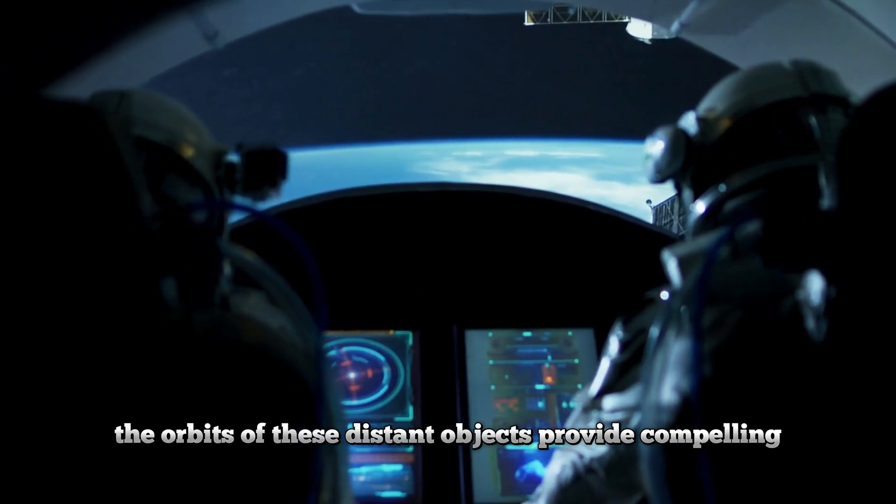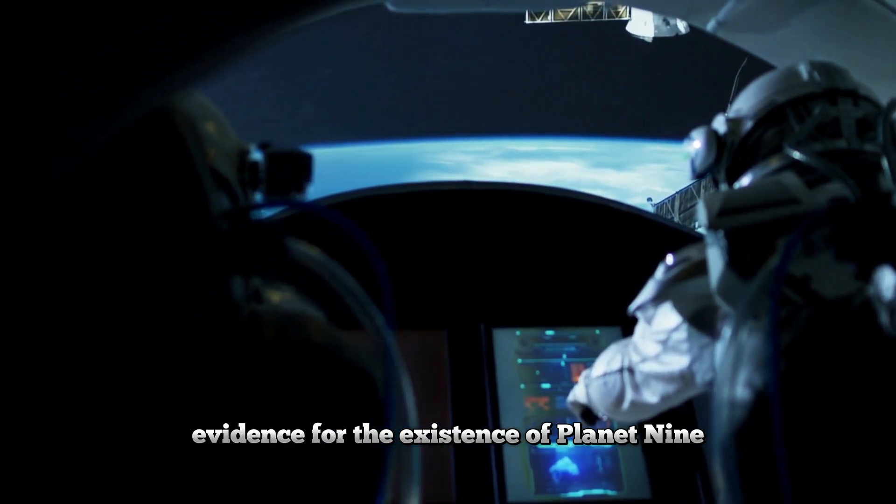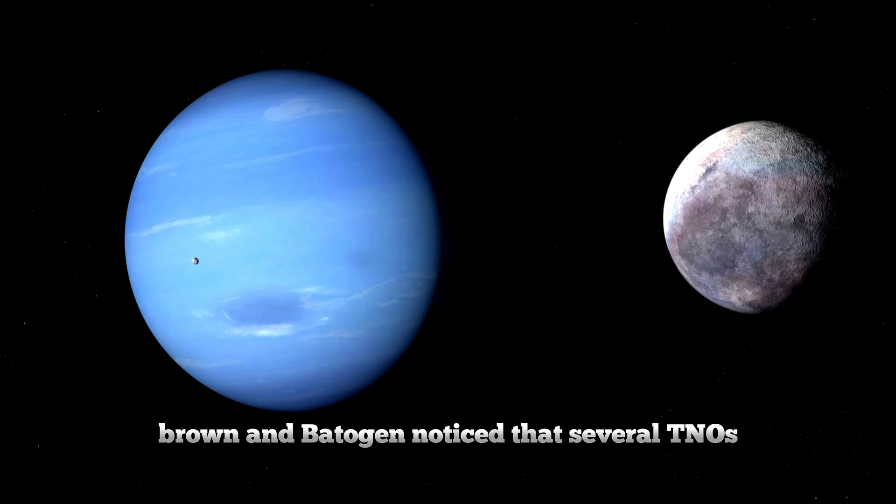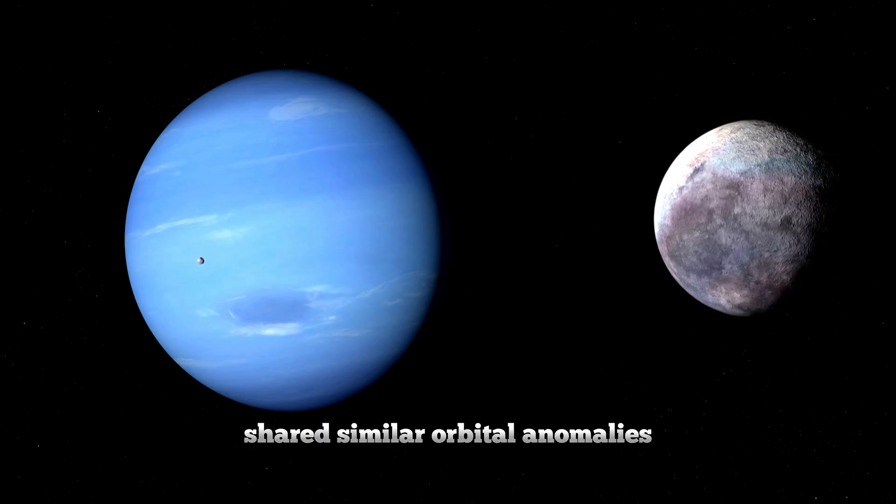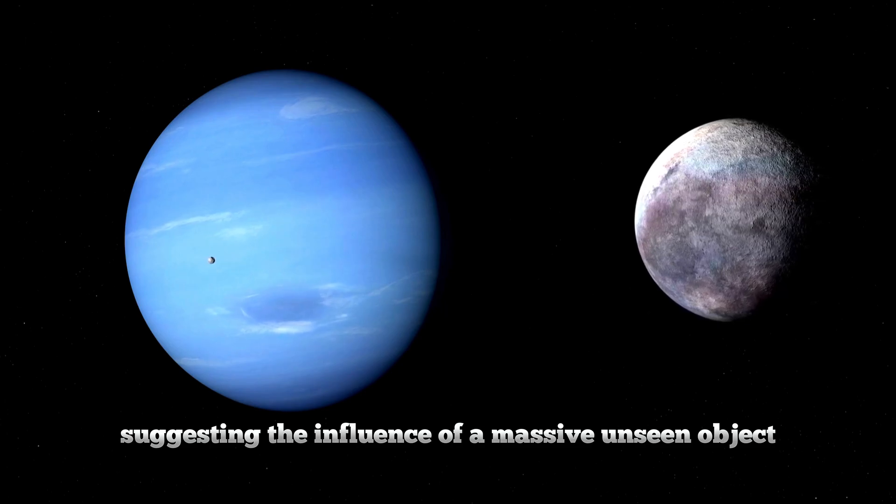The orbits of these distant objects provide compelling, albeit indirect, evidence for the existence of Planet Nine. Brown and Batygin noticed that several TNOs shared similar orbital anomalies, suggesting the influence of a massive unseen object, Planet Nine.